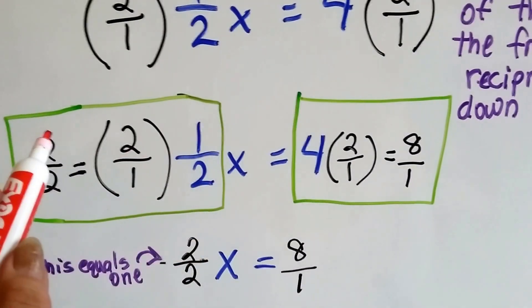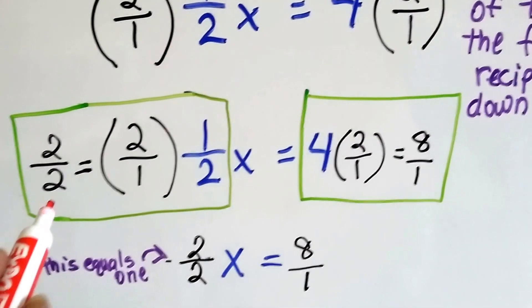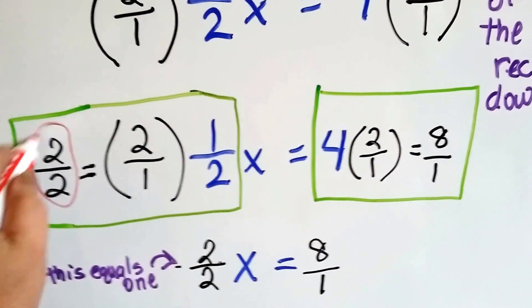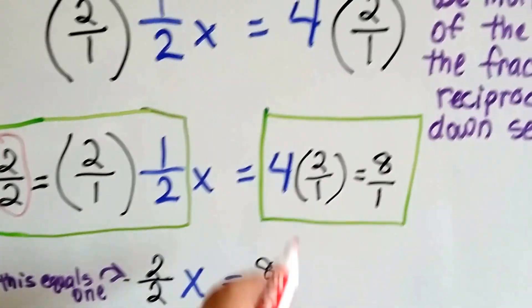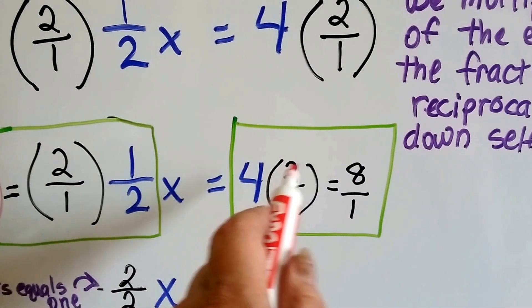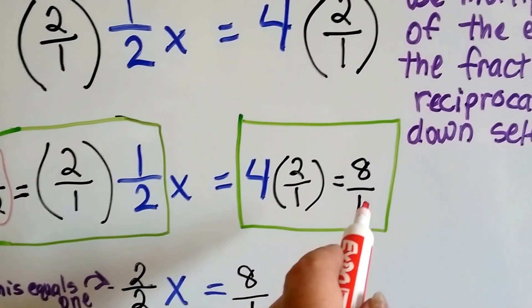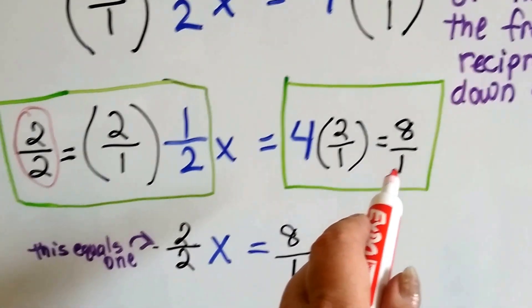And 2 times 1 is 2, and 1 times 2 is 2. And we create 2 over 2. Look at that. It made a 1. And then on this side, we do 4 times 2 is 8, and the 1 slides over, we have 8 over 1 as an improper fraction.